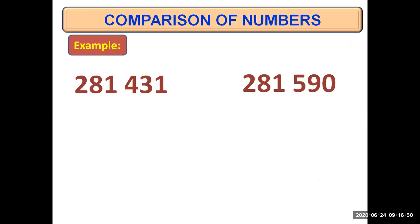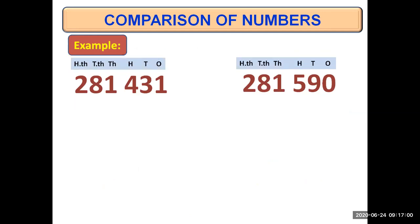Let's have another example. We have two more six digit numbers: 281431 and 281590. Once again, mention the place values first and start comparing from the highest place value, which is hundred thousands in this case. When we look at the hundred thousands of both numbers, both of them have two — that is the same digit, equal.